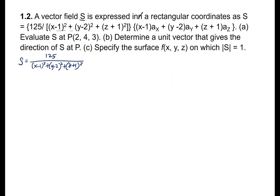The other part is the direction — it includes X minus 1 times AX, plus the corresponding Y and Z direction terms. So the vector field has both a magnitude part and a direction part, both depending on coordinates X, Y, and Z.